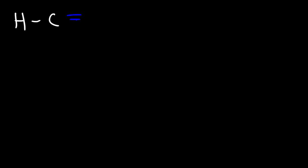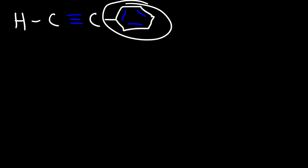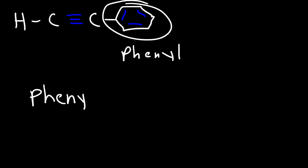For this next example, all I want you to do is write the common name. We have a benzene ring attached to the carbon-carbon triple bond. Notice that whenever you have a benzene ring as a substituent, it's called phenyl. So to name this, it's simply going to be phenylacetylene. For the common name, you need to write it as one word — so keep that in mind.